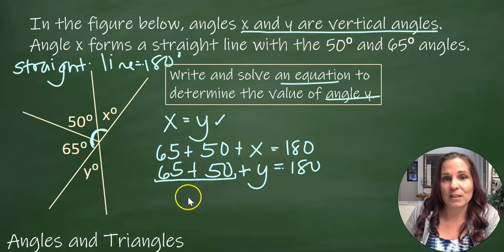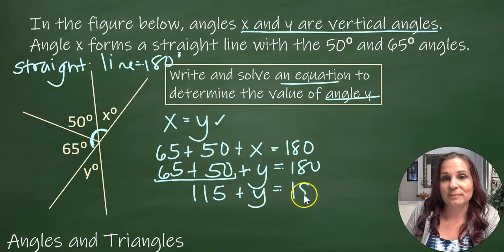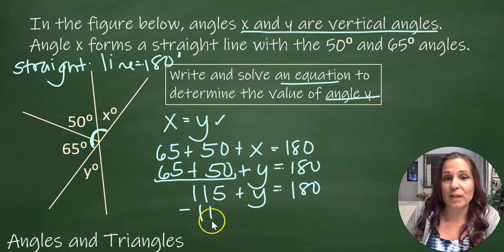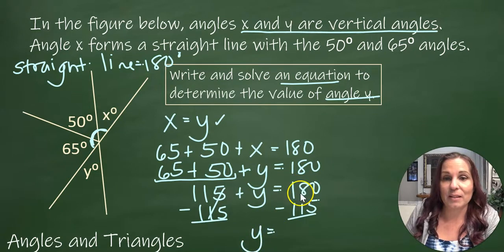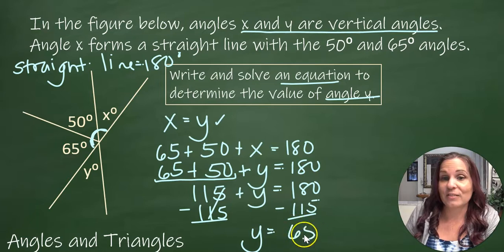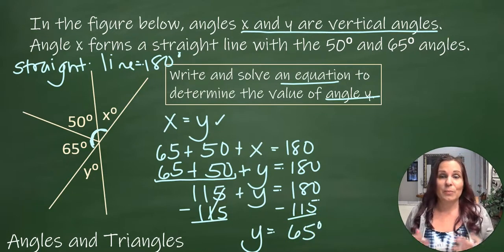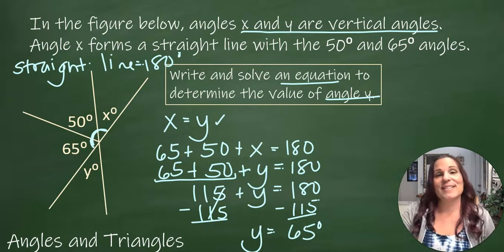So now I combine like terms. 65 plus 50 gives me 115. And then to find Y, I would subtract 115 from both sides. Then that would give me 65. So the value of angle Y is 65 degrees.